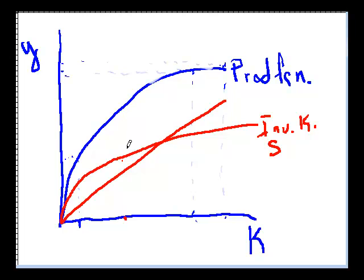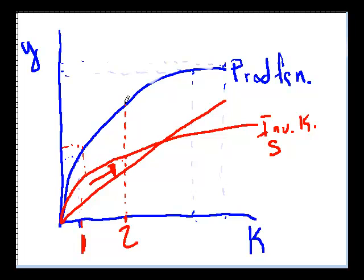Remember, we actually want to consume — we're not just working so that we can continue buying more capital. We want to have things that we can buy. So when you first start getting more capital, going from low capital to high capital, you're getting richer. When you go from one unit of capital you get this output, and when you go to the second unit of capital you get this output — you're much richer. But at some point that's a dilemma, because of the depreciation line, and you can actually be in a situation where you have too much capital.